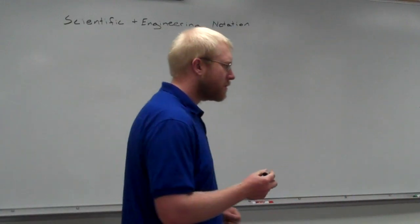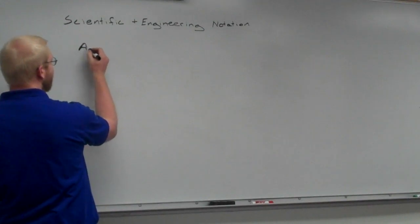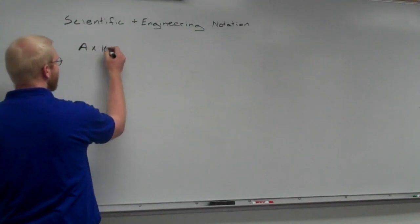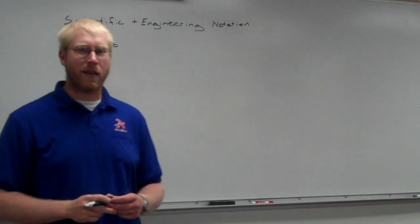Big numbers made small. Big numbers made small. It's usually in the form of A times 10 to the power of B, right? It's usually the form it ends up in.